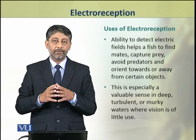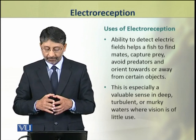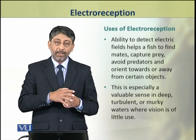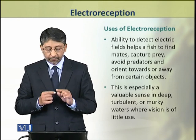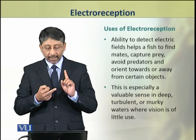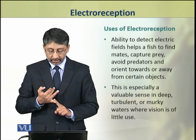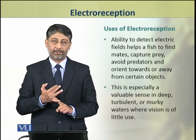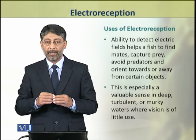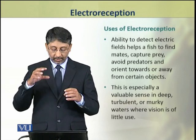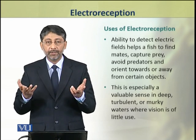Dear students, now we shall discuss the uses of electroreception. The ability to detect electric fields helps a fish or other animal to find mates, capture prey, avoid predators, and orient towards or away from certain objects. This sense is especially valuable in deep, turbulent, or murky waters where vision is of little importance.